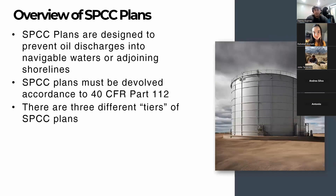SPCC plans are designed to prevent oil discharges into navigable waters or adjoining shorelines. These plans must be developed in accordance with 40 CFR Part 112, and there are three different tiers of SPCC plans. In the SPCC regulations, it doesn't state there are three — it only specifically states Tier 1 and Tier 2. However, I like to break it down into three, and I'll explain why when we get to that section.